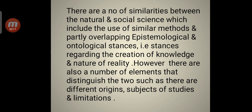There are a number of similarities between the natural and social science which include the use of similar methods and partly overlapping epistemological and ontological stances, that is stances regarding the creation of knowledge and nature of reality. However, there are also a number of elements that distinguish the two such as different origins, subjects of studies and limitations.